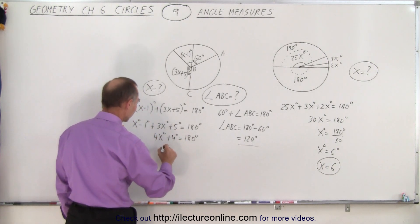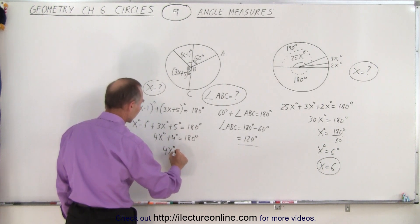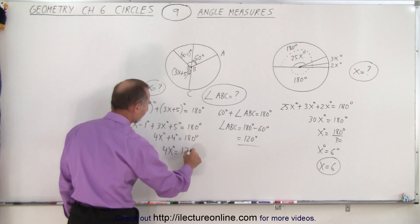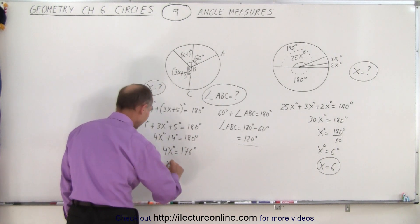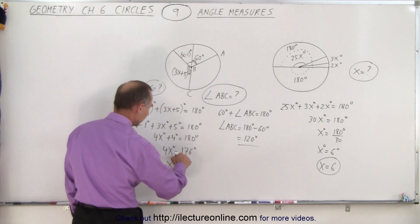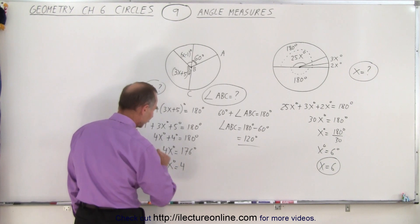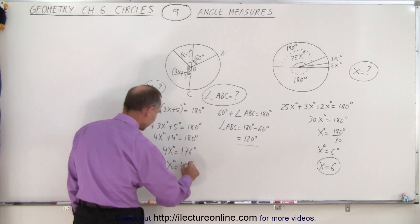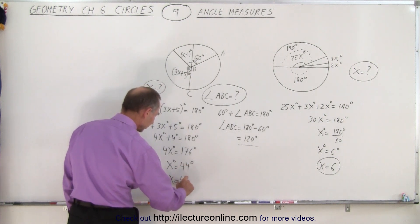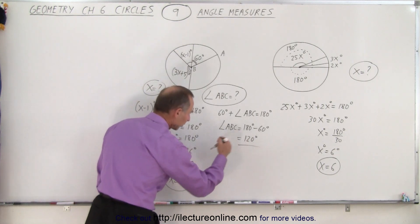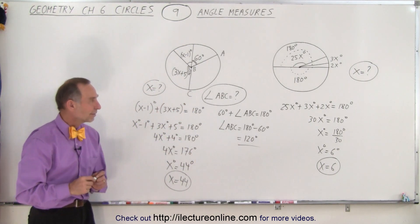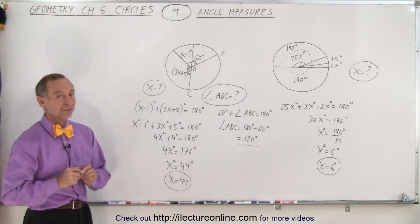Now move that across so we have 4x degrees is equal to 176 degrees, subtracting 4 from both sides. And then we can say that x degrees is equal to—4 goes into 176, 44 times—yes, 44 degrees, or x equals 44. So we can also solve for x and we also solve for the angle ABC, and that is how it's done.